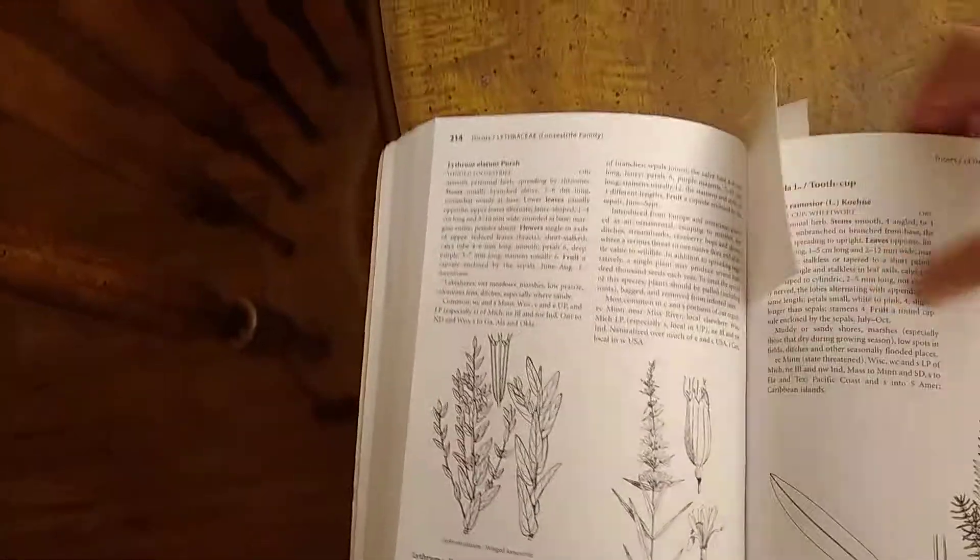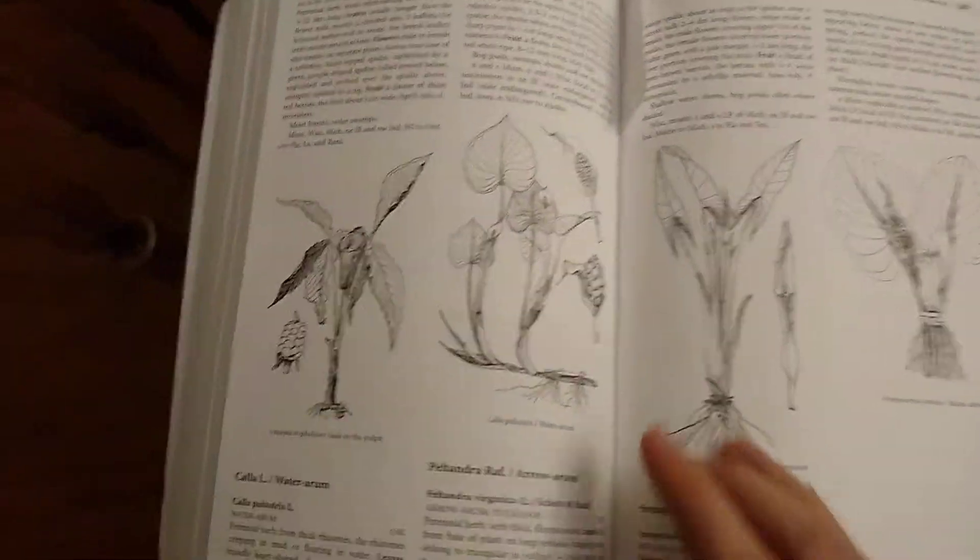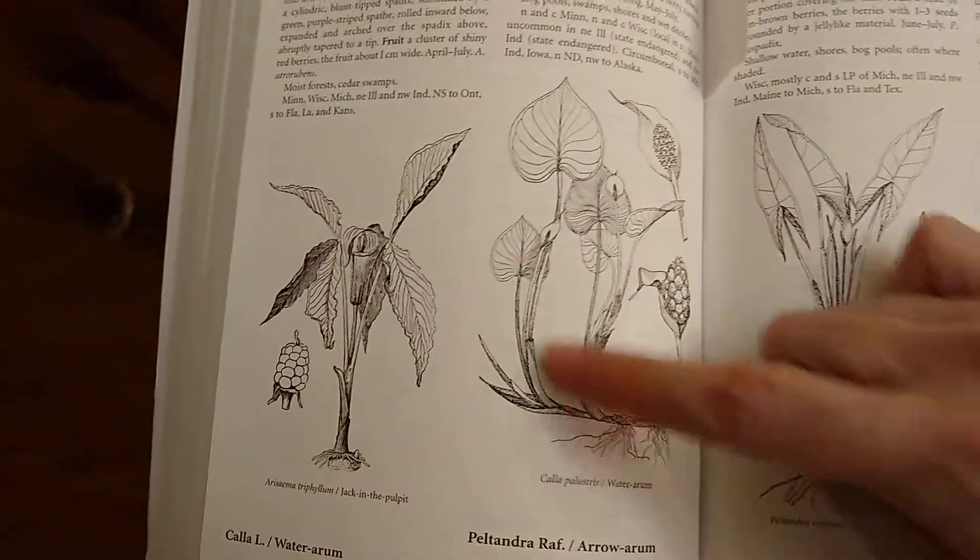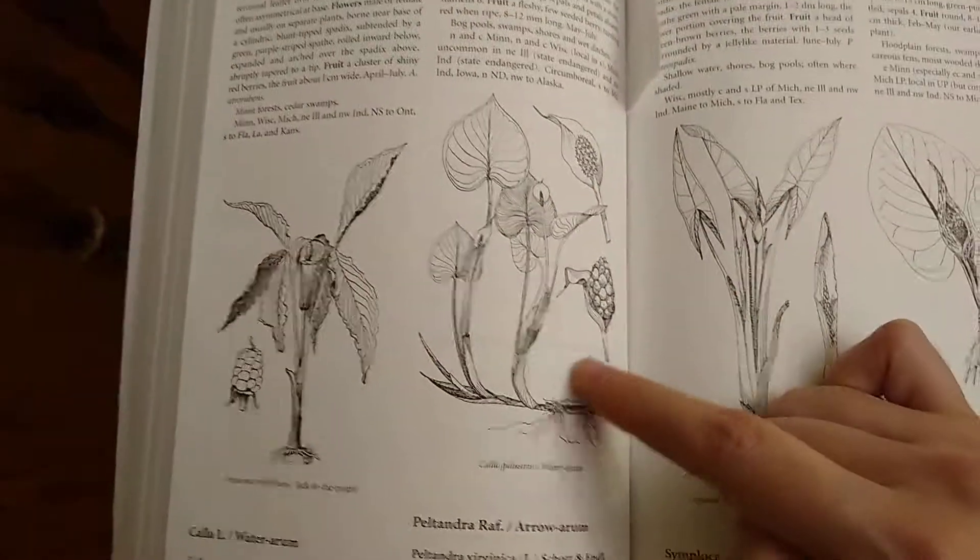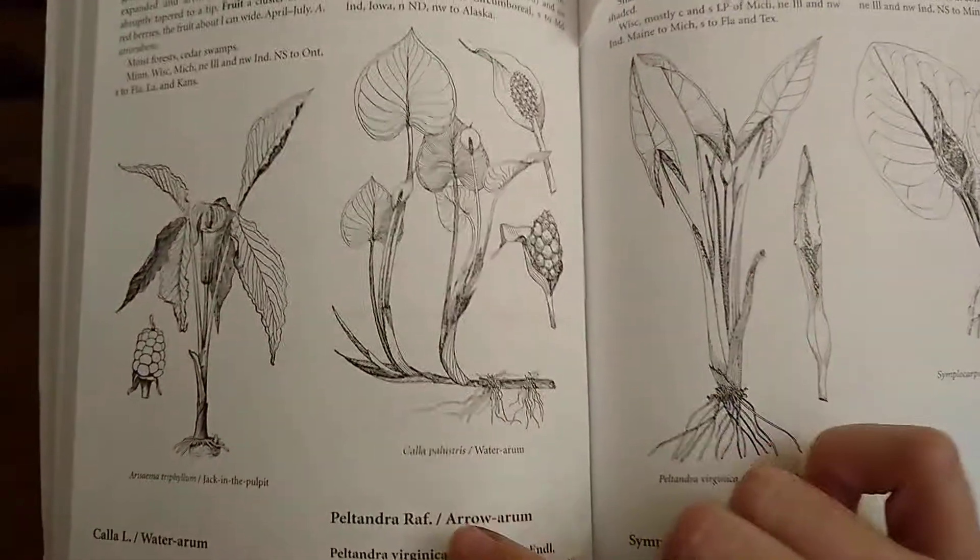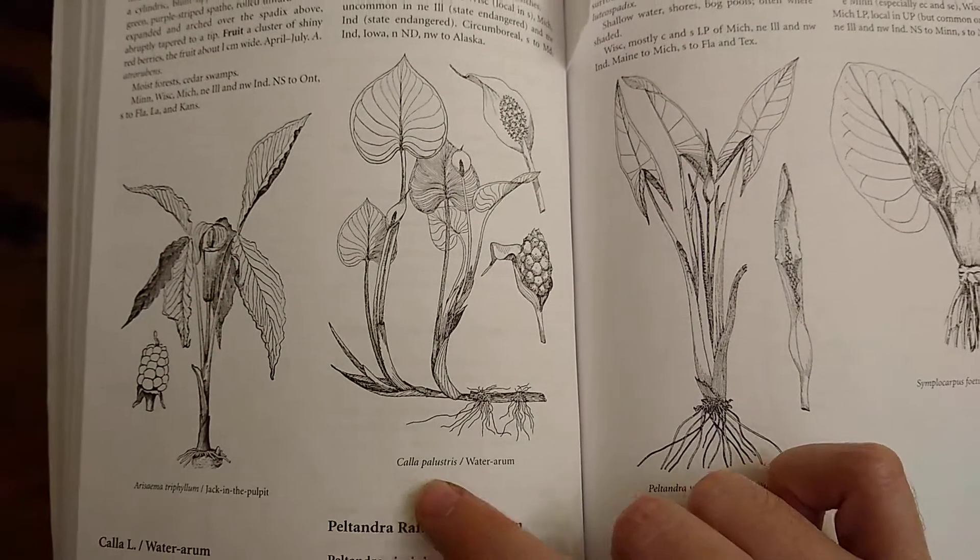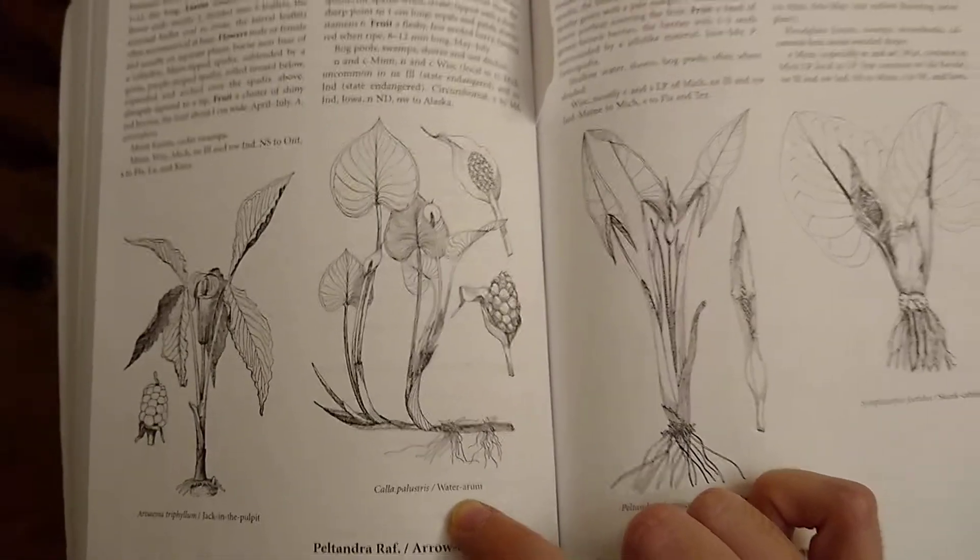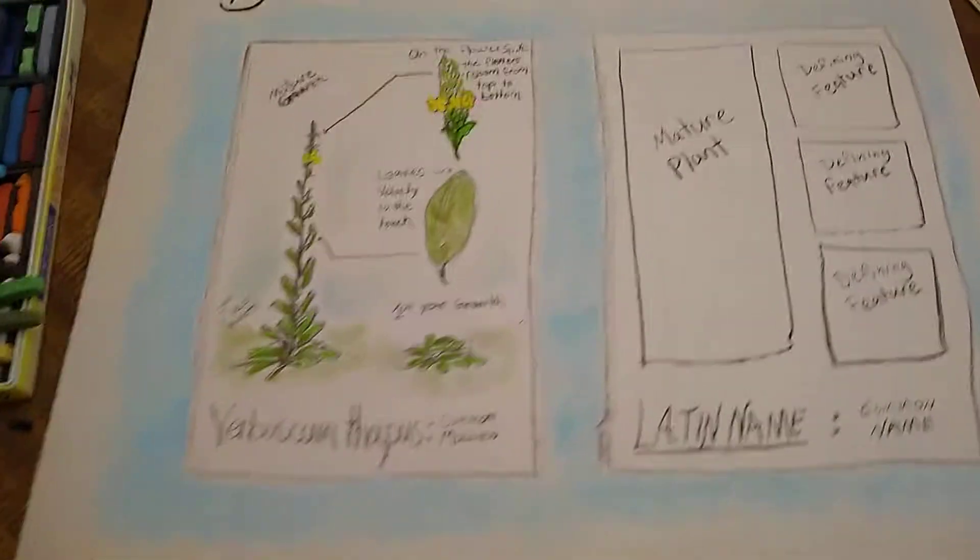And again, later on in the book, we have some more plants. Look here. The whole plant, the seed pod, and also the flower. And again, it includes the latin name and the common name. These are all the features that you'll find in just about every scientific illustration.